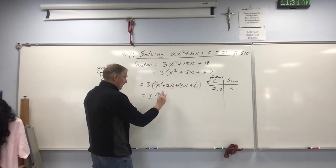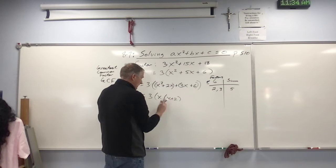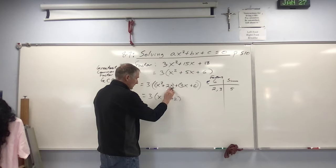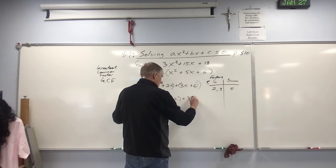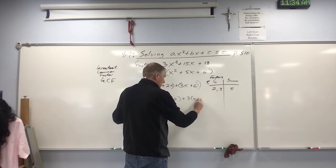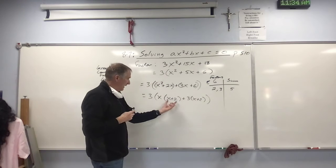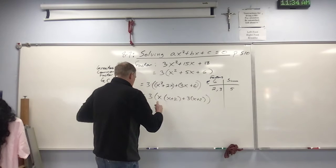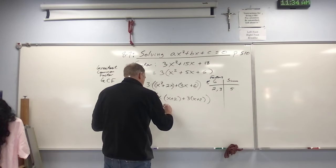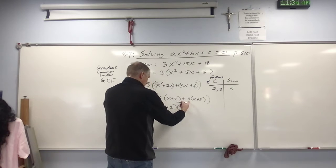I'm going to factor out an x and that's going to leave x plus 2. Double-check: x times x is x squared, x times 2 is 2x. Over here I can factor out a 3, and that leaves x, because 3 times x is 3x, and a 2, because 3 times 2 is 6. Notice now that I have a greatest common factor within these outer parentheses of x plus 2 and x plus 2. So this is 3 times (x + 2) times (x + 3).